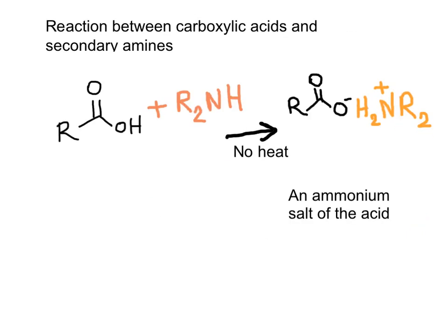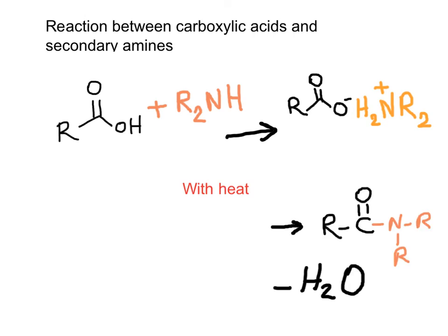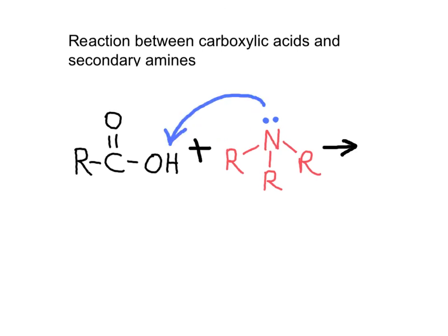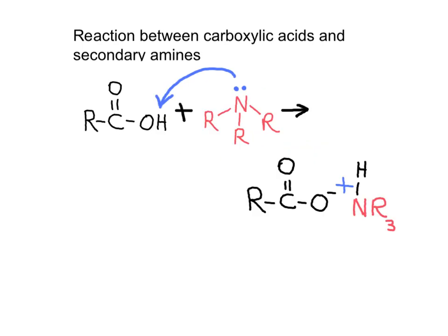The process is the same when using a secondary amine — it will make a tertiary amide when the substance is heated. However, when the reaction is between a carboxylic acid and a tertiary amine, with or without heat, the product will be the same: it will be an acid-base reaction with the amino group, not the formation of a covalent bond between the nitrogen and the carbonyl. The product is the carboxylate associated with the ammonium ion.